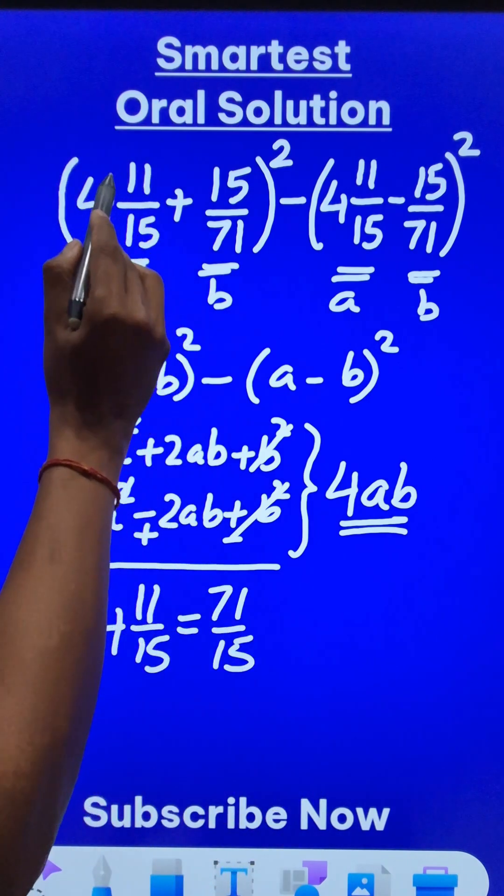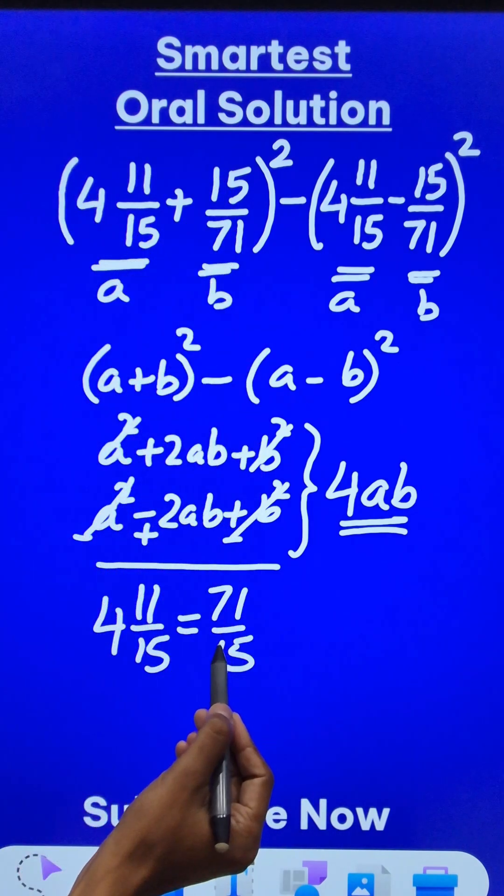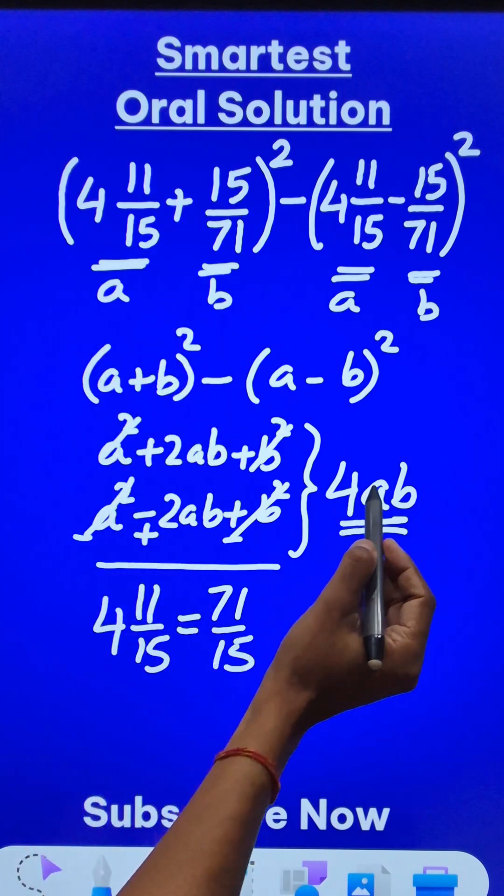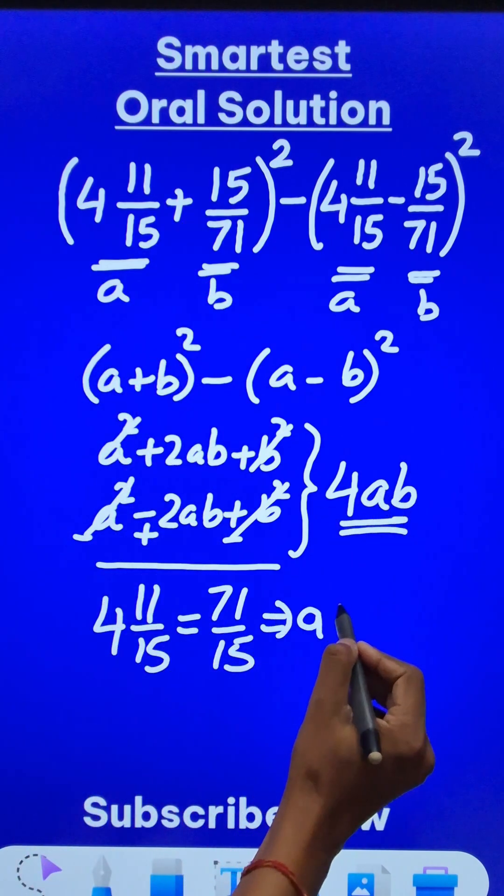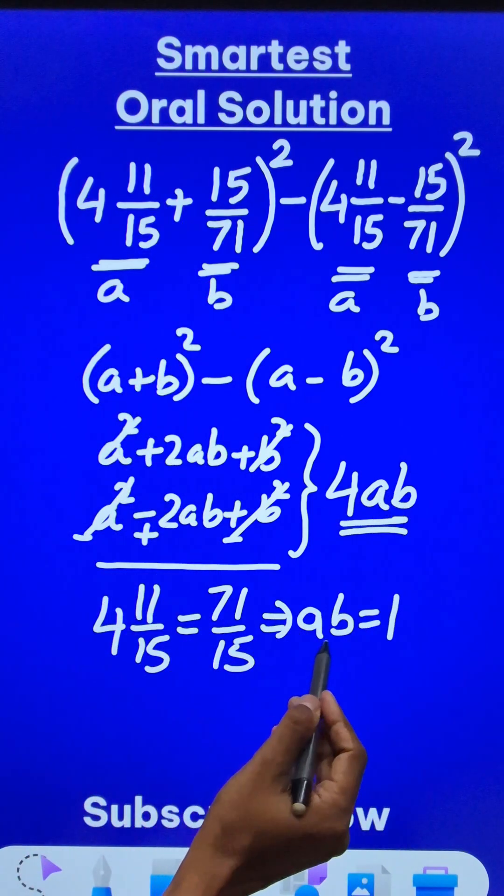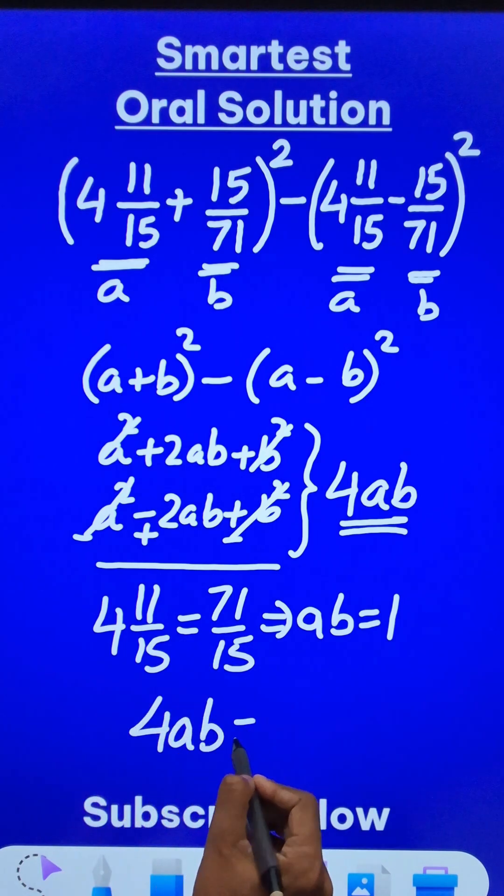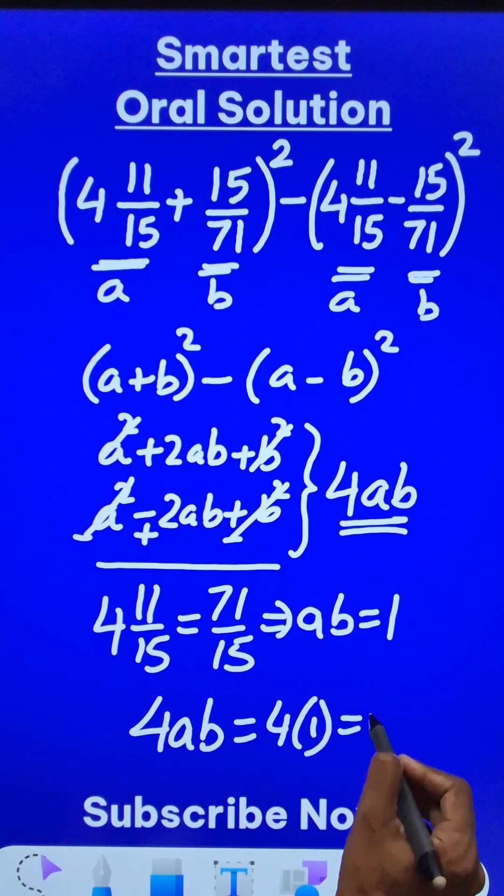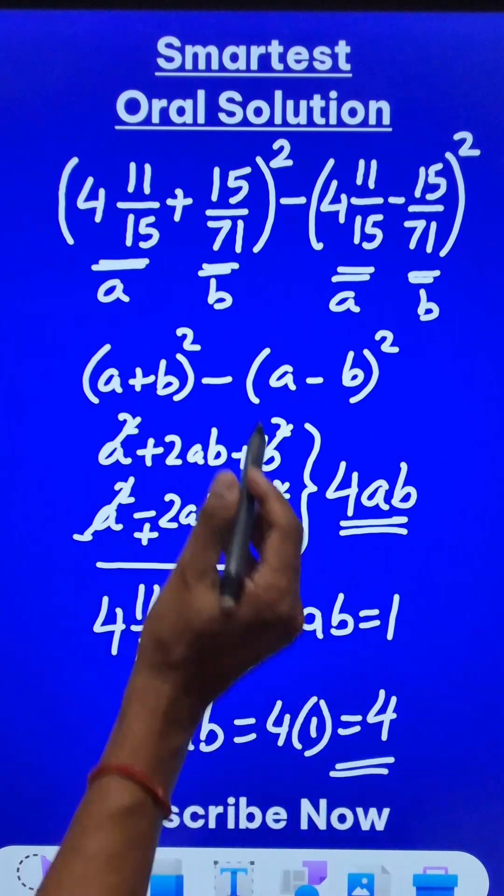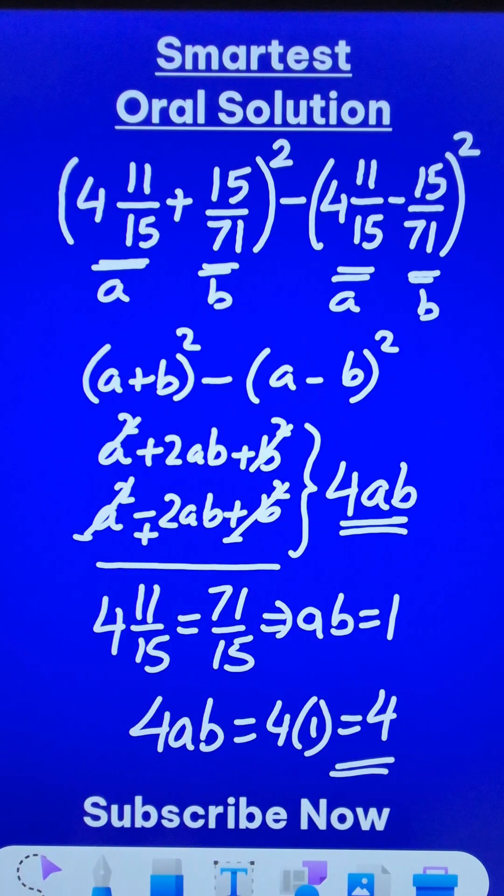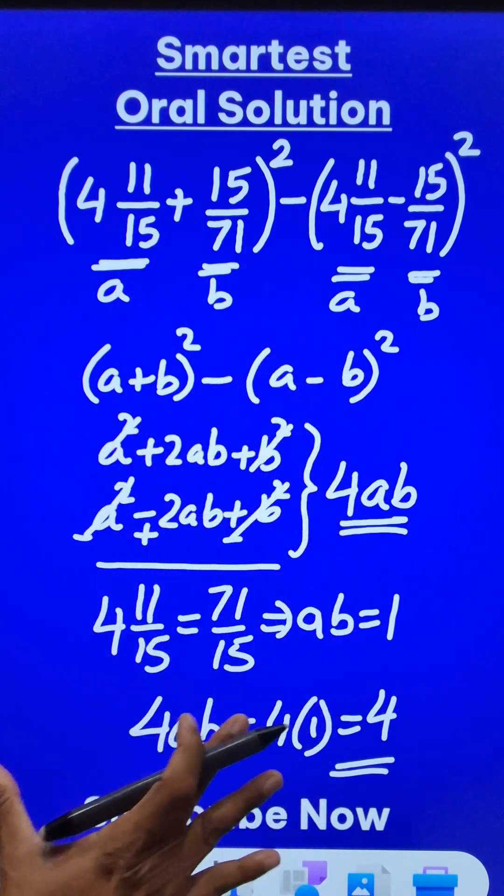So if you do a times b, it will be 1 because a and b are reciprocals of each other. And therefore, 4ab reduces to 4 into 1, which is 4. The answer for the question is 4. And all these steps which I have written here are mental maths steps.